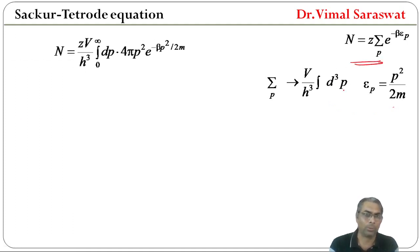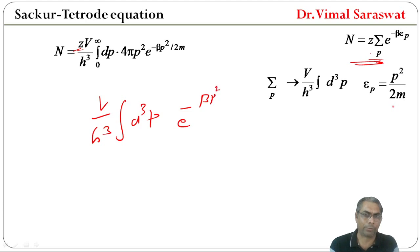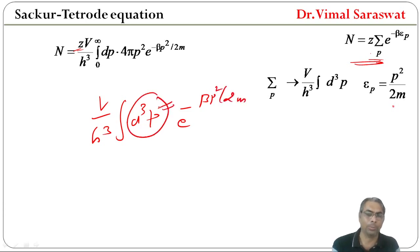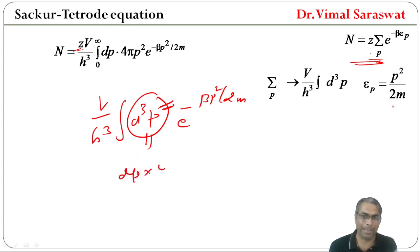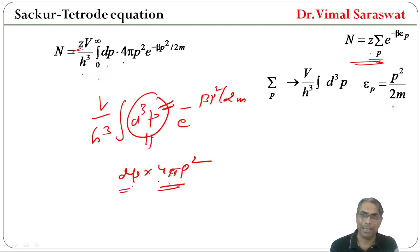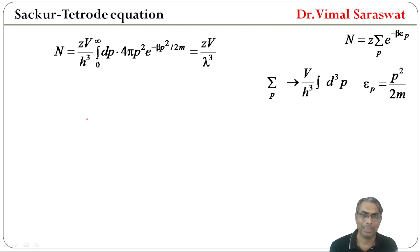So N = Z · (V / h³) · ∫d³p · e^(-β p²/2m), where d³p represents the volume element in momentum space, which becomes 4πp²dp.